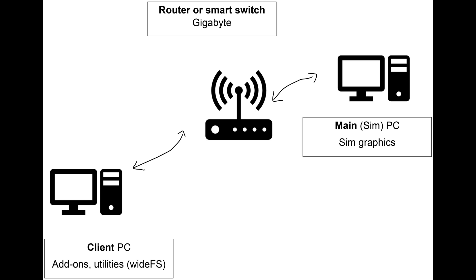Back to network basics. In my case I've got two computers running across the network, but the principles of WideFS apply the same however many secondary PCs you've got. The client PC will be the PC with air traffic control or other utilities running remotely, and the main simulator PC is where you're running the graphics and main sim program. Traditionally the simulator PC will be the more powerful one, while the client PC can be less powerful — it doesn't need a strong processor or a powerful graphics card.